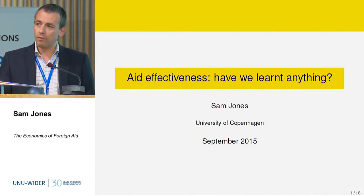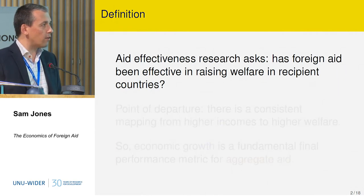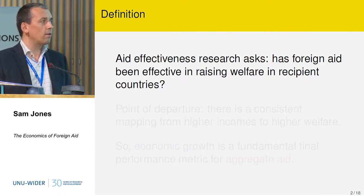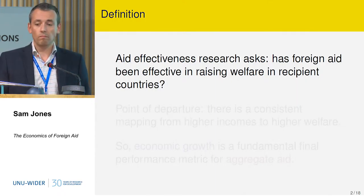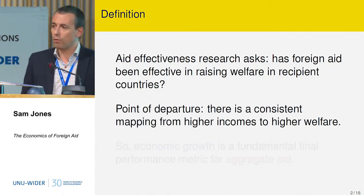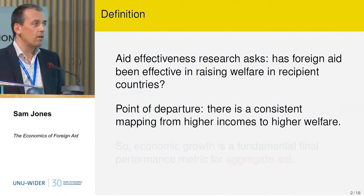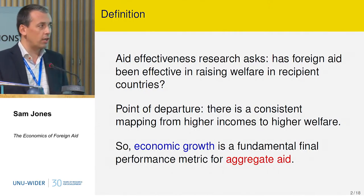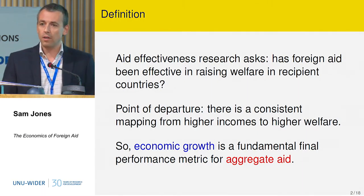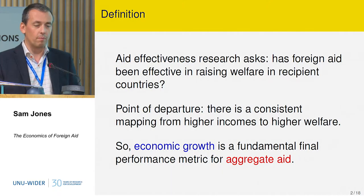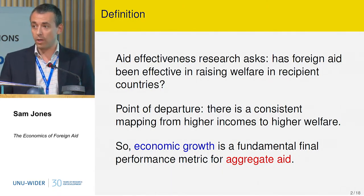And finally, I will conclude with some brief implications. Aid effectiveness research essentially asks the question: has foreign aid been effective in raising the welfare of households and individuals in recipient countries? As economists, we typically start from the point of departure that there is some reasonably consistent mapping between higher income and higher welfare. That's why a lot of the literature has focused on economic growth as a fundamental final performance metric of foreign aid, though there is significant debate about concentrating only on economic growth as a metric.